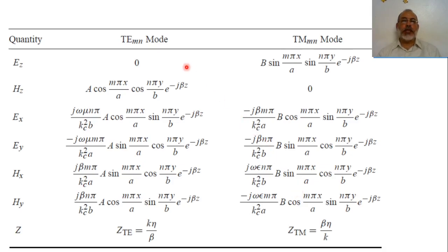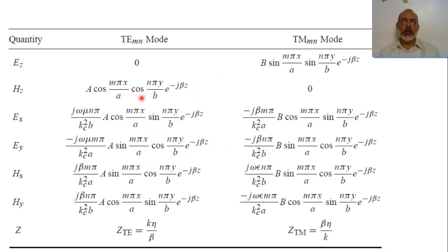For the transverse electric modes, the field components are Hz, Ex, Ey, Hx, and Hy. For the transverse magnetic modes we have Ez, Ex, Ey, Hx, and Hy. These are the field components already derived for both the transverse electric and transverse magnetic modes.